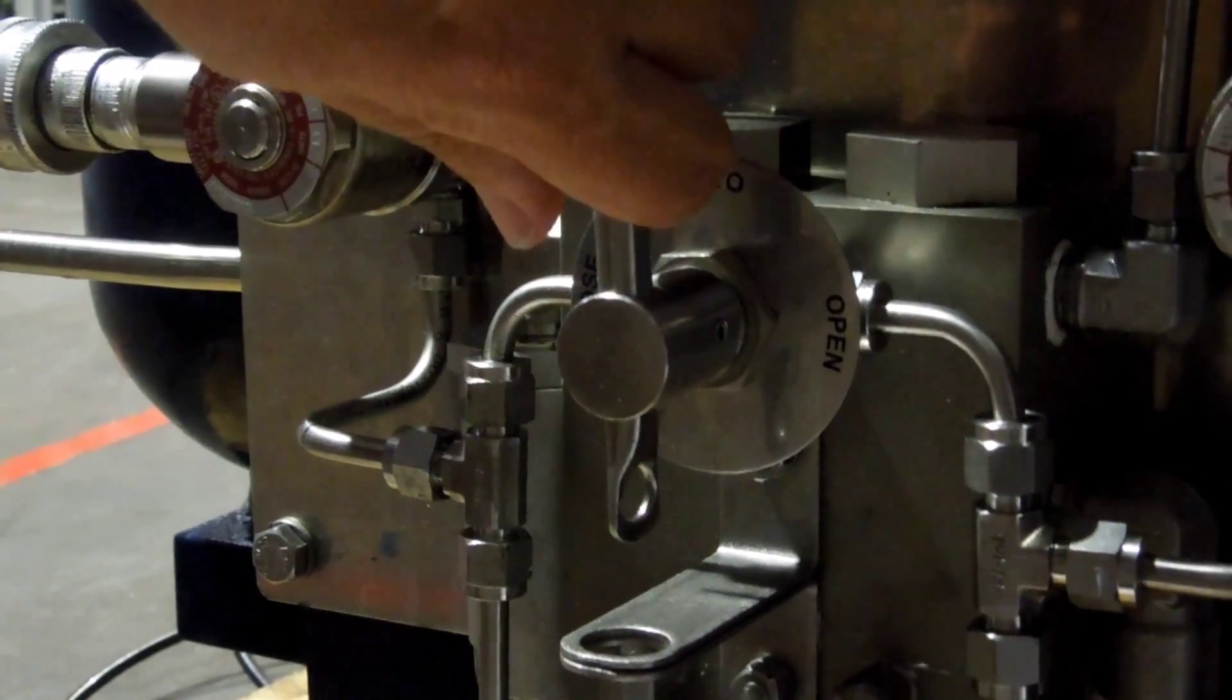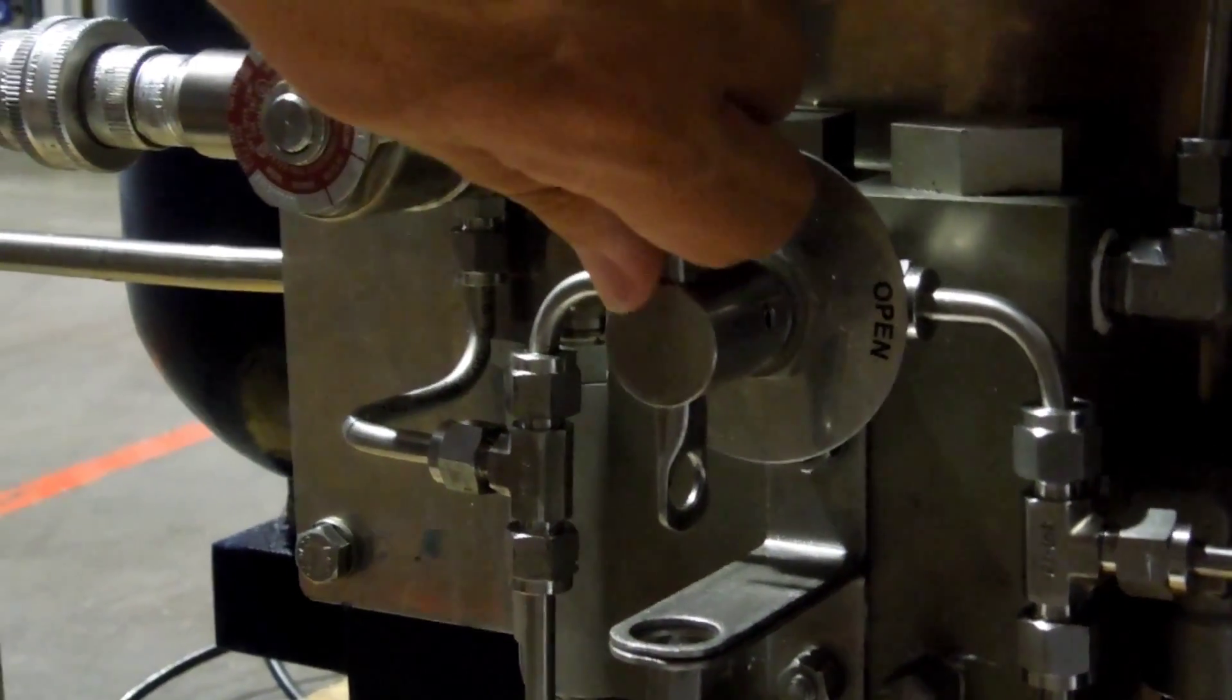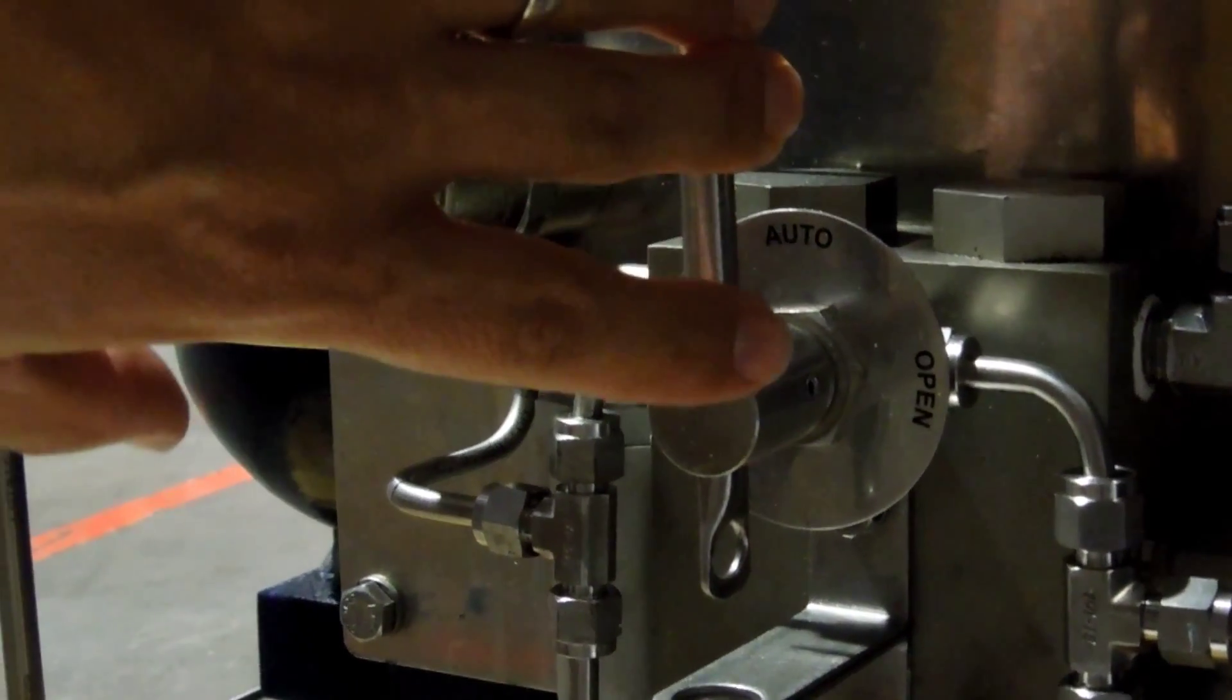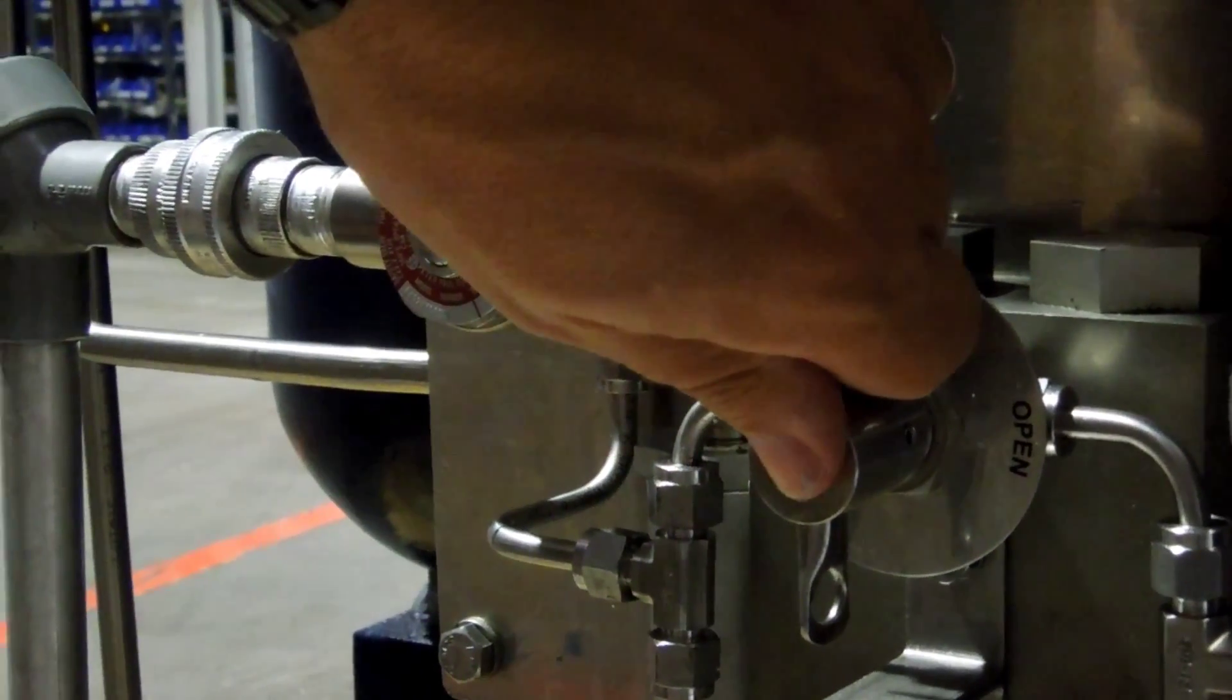Now we're going to go ahead and close the valve with the local controls. All we're going to do is simply turn it left to close and the valve is going to close.